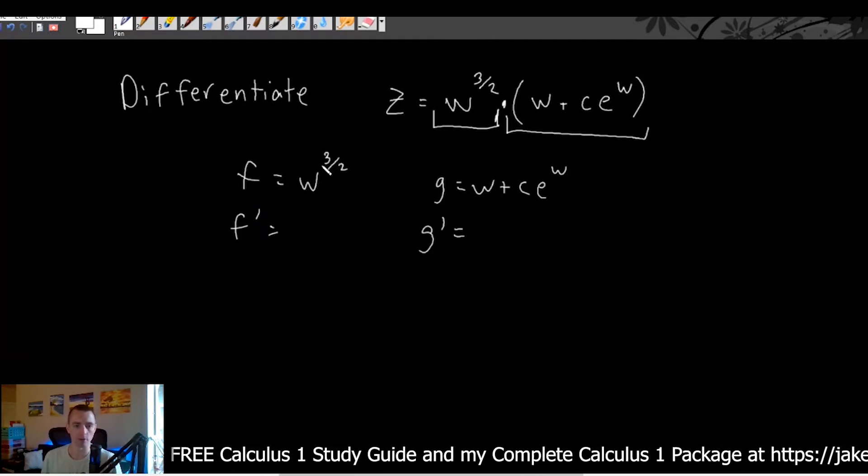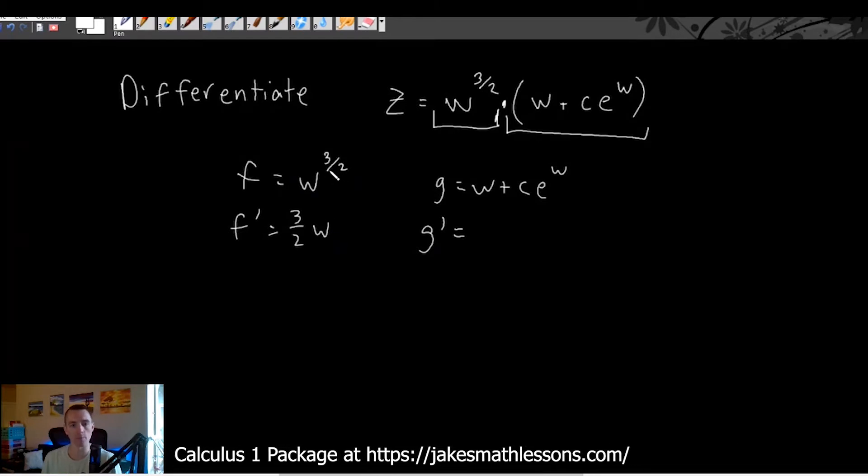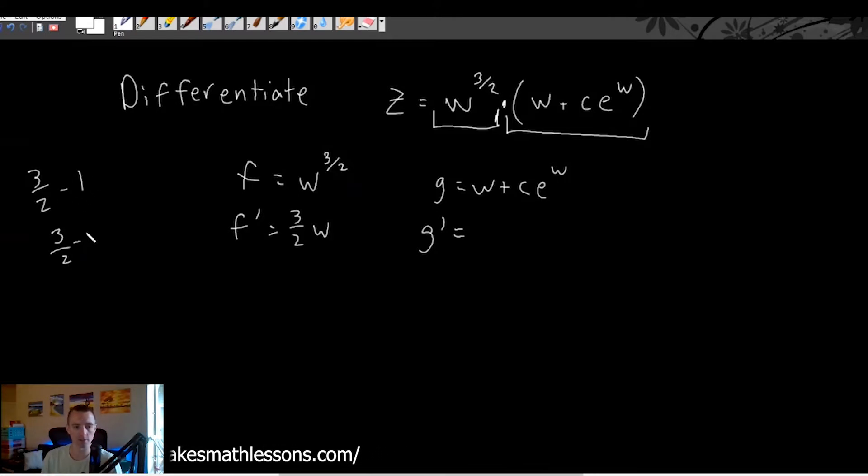So to find the derivative of w to the three halves, we can do power rule. We'll bring our power down in front, giving us three halves here, keep our w as w, and then subtract one from the power. Three halves minus one is the same as three halves minus two halves, which is the same as one half. So this new power is going to be one half.